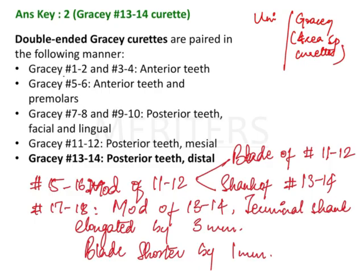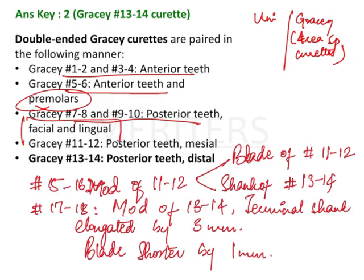Gracey curettes are paired instruments and they are numbered according to the area where they are supposed to be used. Numbers 1 and 2, 3 and 4 are for the anterior teeth. 5 and 6 are for anterior teeth and premolars. 7 and 8, 9 and 10 are used for the posterior teeth — facial and lingual — that is premolars and molars. Gracey number 11 and 12 is used on the posterior teeth on the mesial side, and 13 and 14 is used on the distal side.